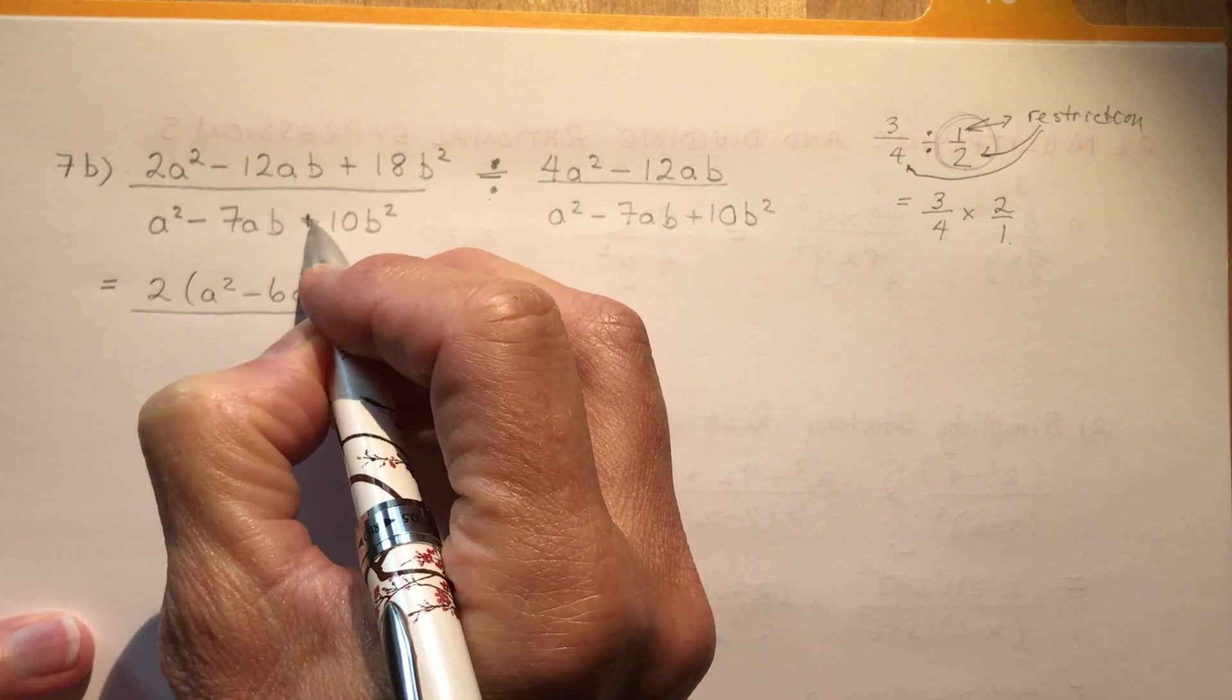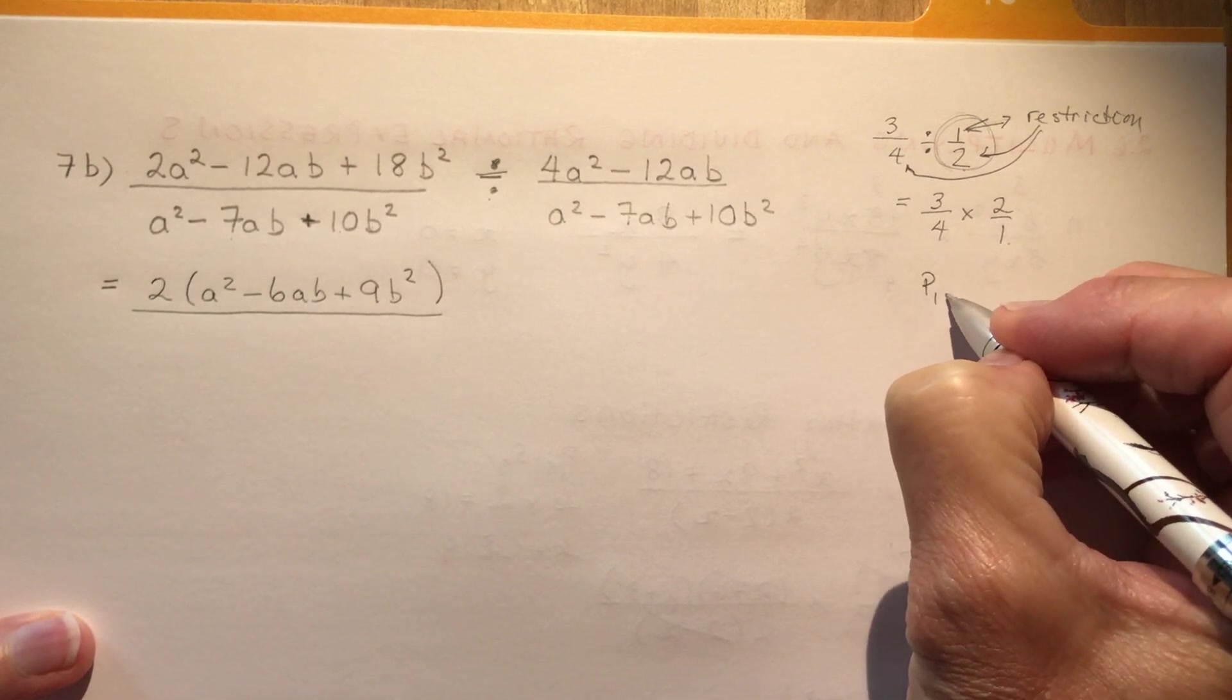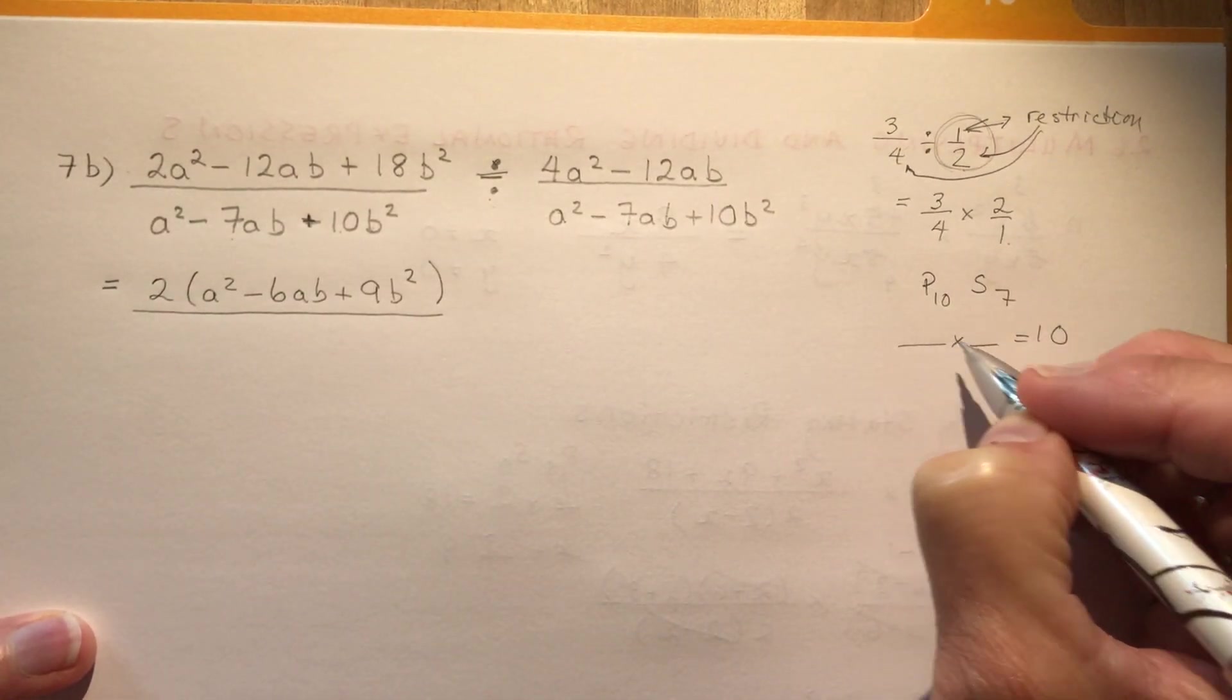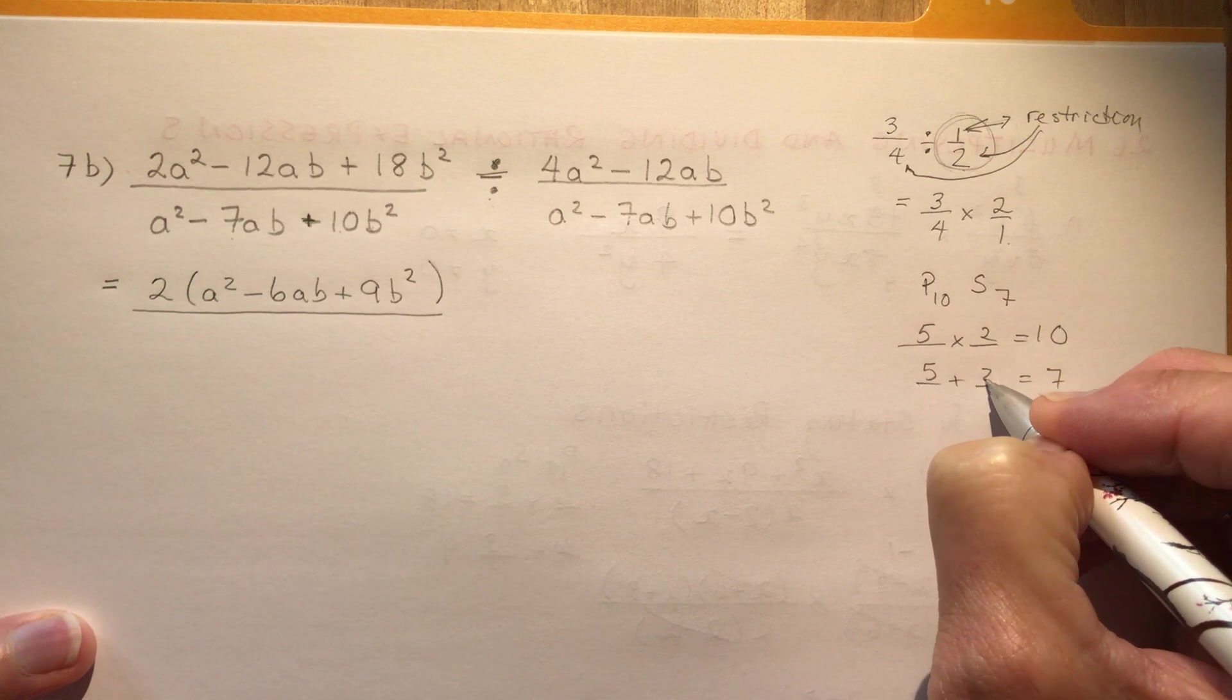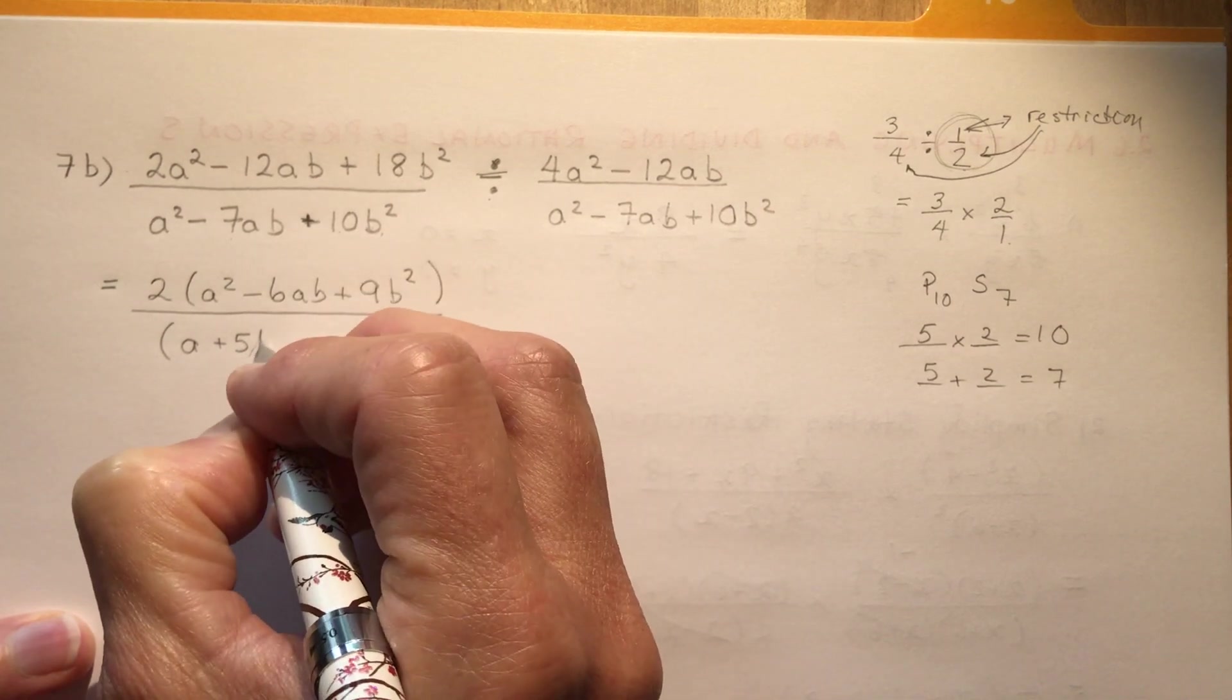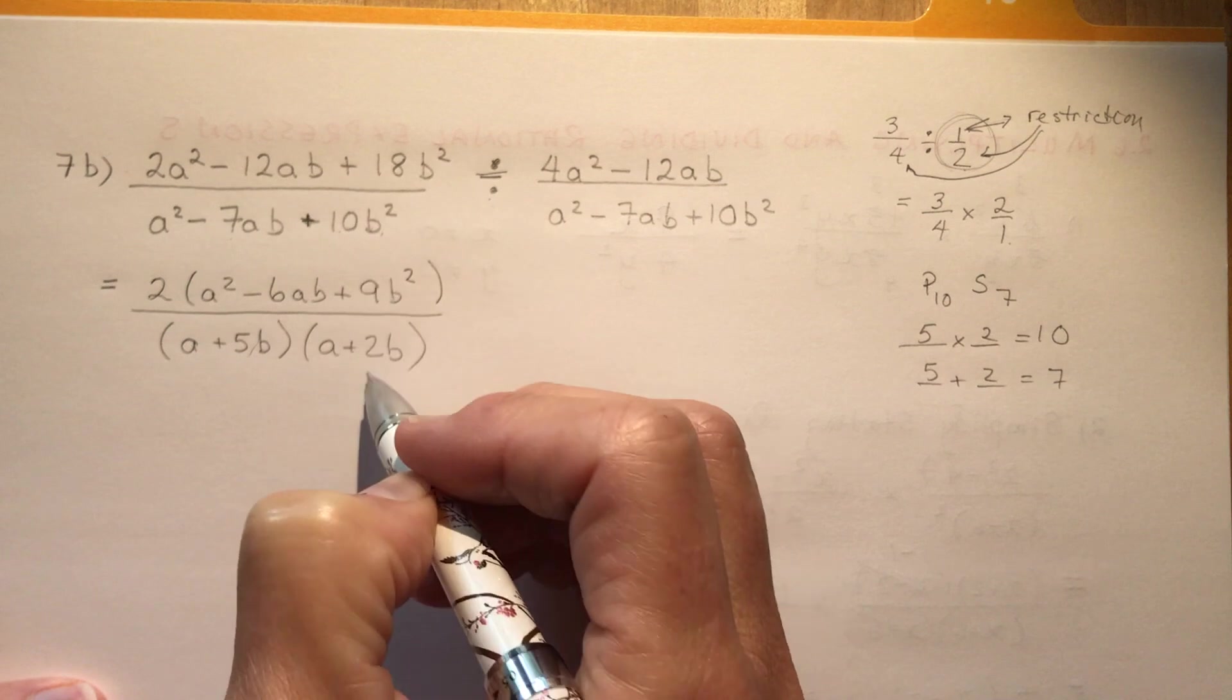I might want to just go right ahead and factor this one now. So I'm looking for a product of 10 and a sum of minus 7. You should always do that off to the side. You don't want it in the middle here, it just makes a big mess of your nice math. So you probably got this one figured out. Five times two, five plus two. And so this is going to give me a plus five. And I need a B this time, so a plus five B and then a plus two B.